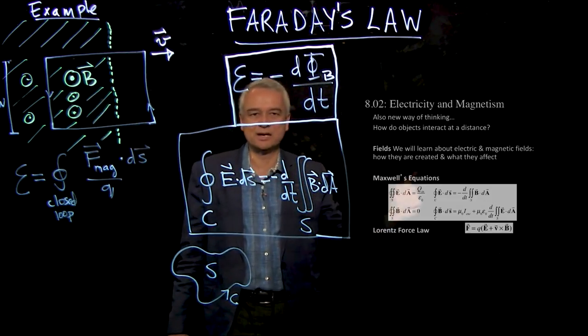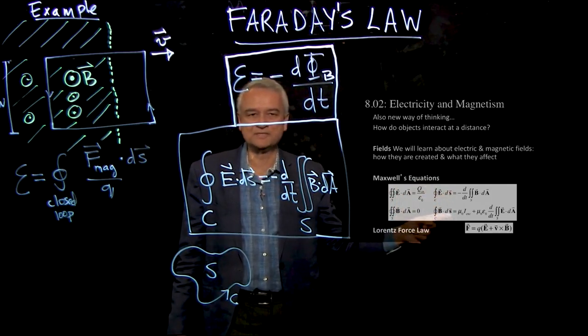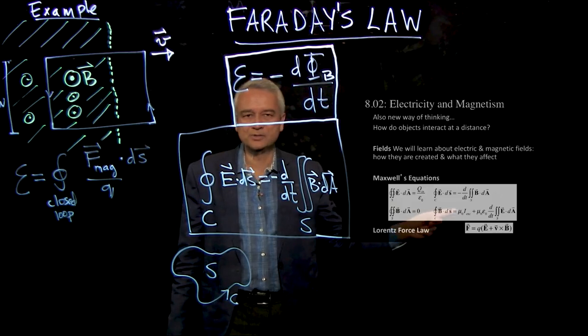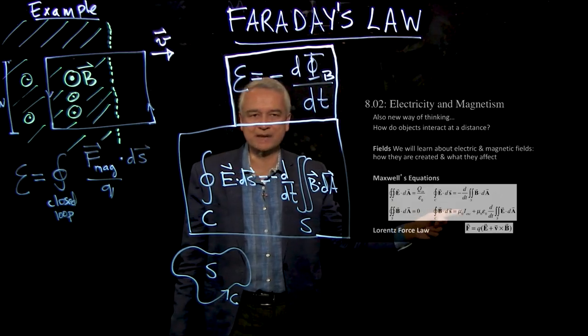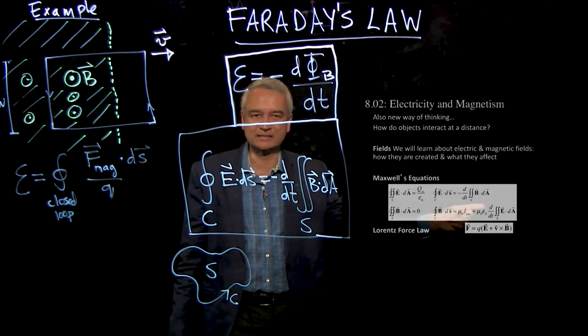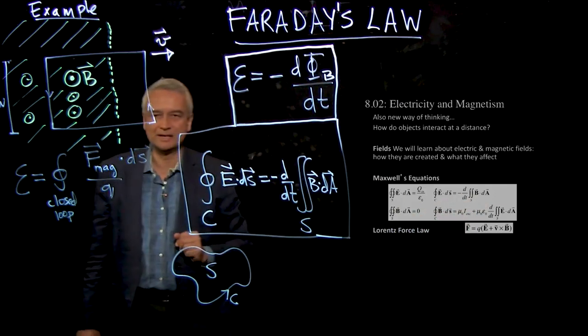You've seen Gauss's law, we've seen magnetic Gauss's law, and now we have the third equation here, which is Faraday's law. And if you look carefully, this fourth one, this is Ampere's law. But the one thing you should notice is that Ampere's law has this new term on the right hand side, and that's the only thing that we're missing right now.